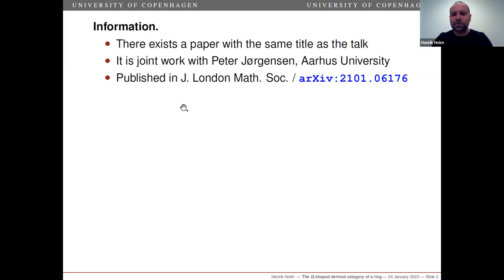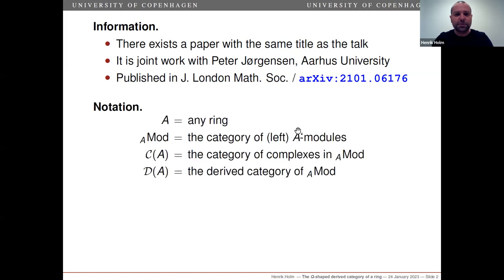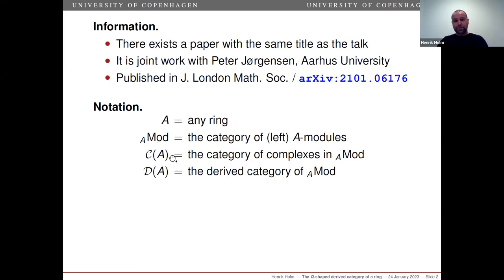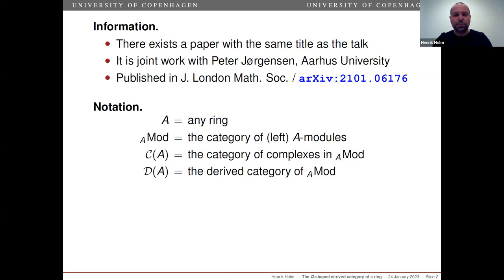You can find it online, or you can write me an email or ask me in the seminar. Let me start by setting up some notation. Throughout the talk, A will be any ring, any non-commutative ring. A-mod will be the category of left A-modules. C of A will be the category of complexes of A-modules. And D of A will be the derived category of A-mod. I want to tell you about some key facts about the derived category, because this is somehow the motivating category for the construction I will talk about today.